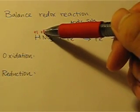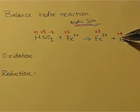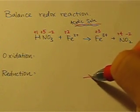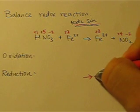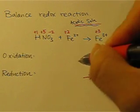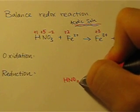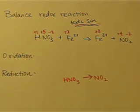Nitrogen, going from positive 5 to positive 4. It is going down. So, it is reduction. Let me just write the compound here. And we will balance it later on.